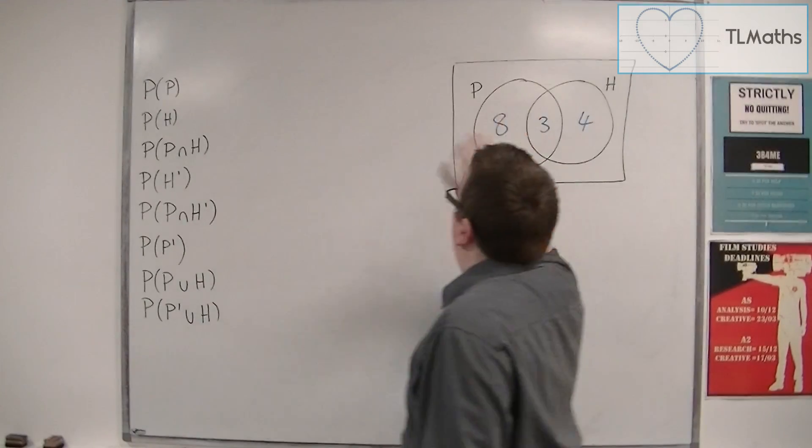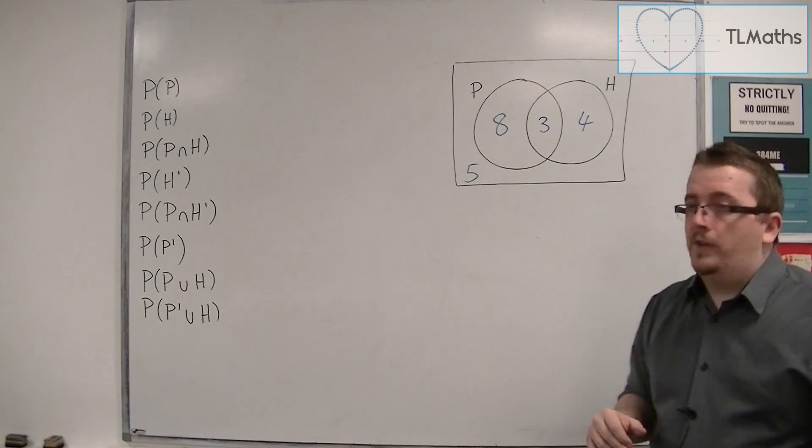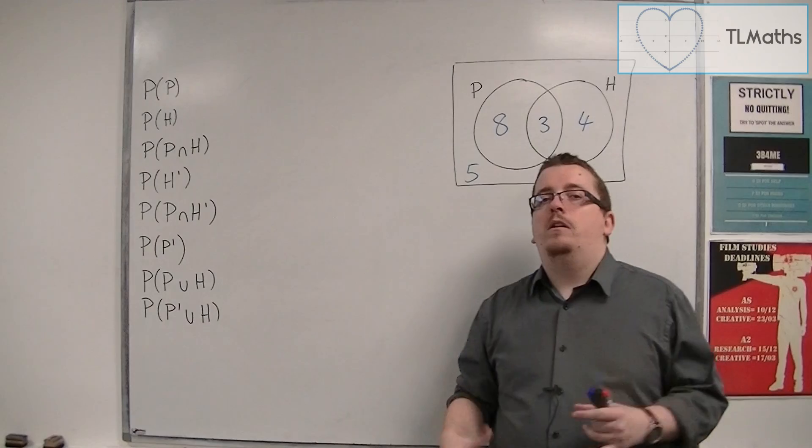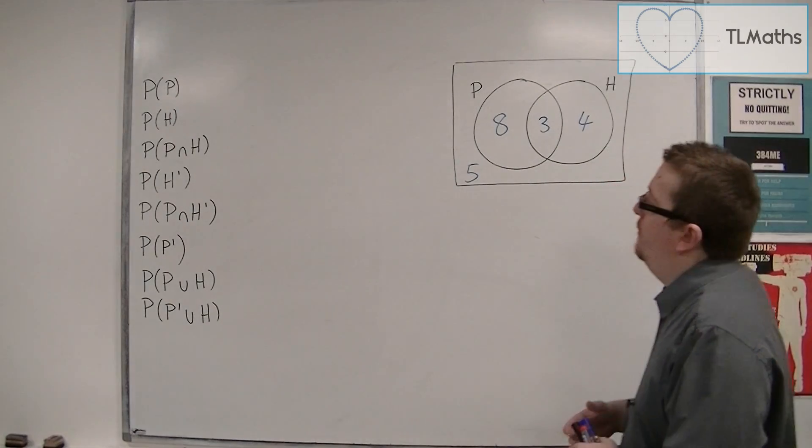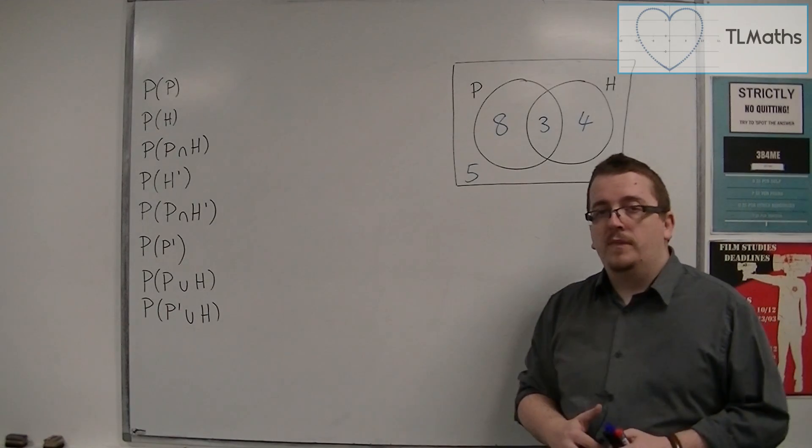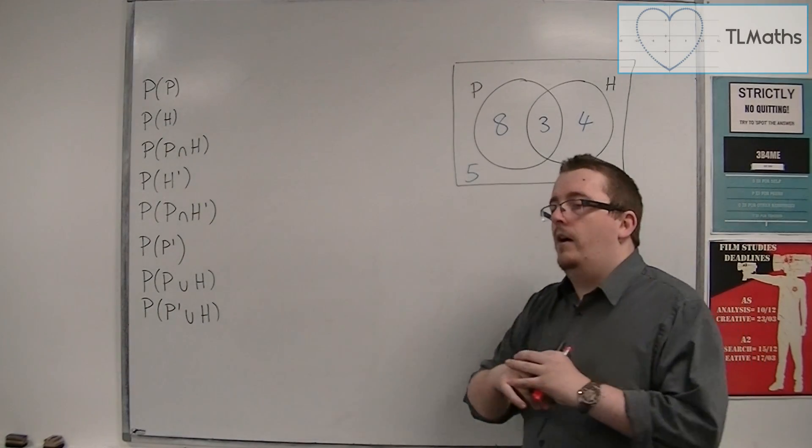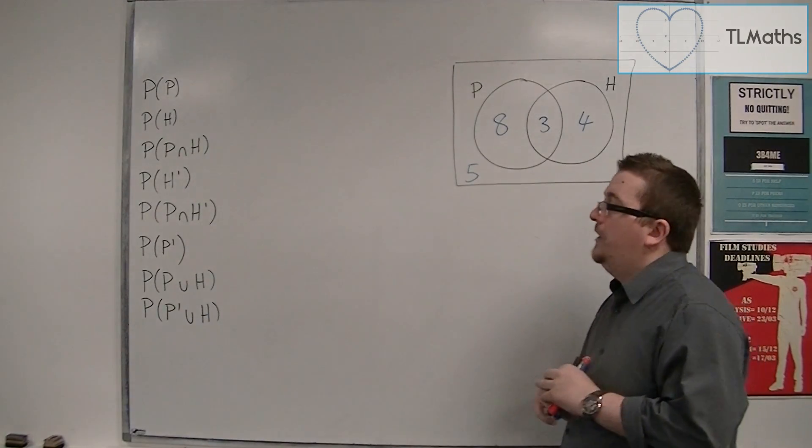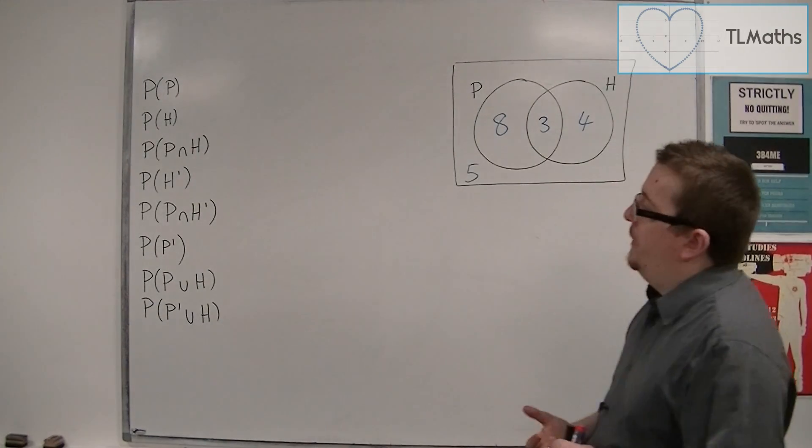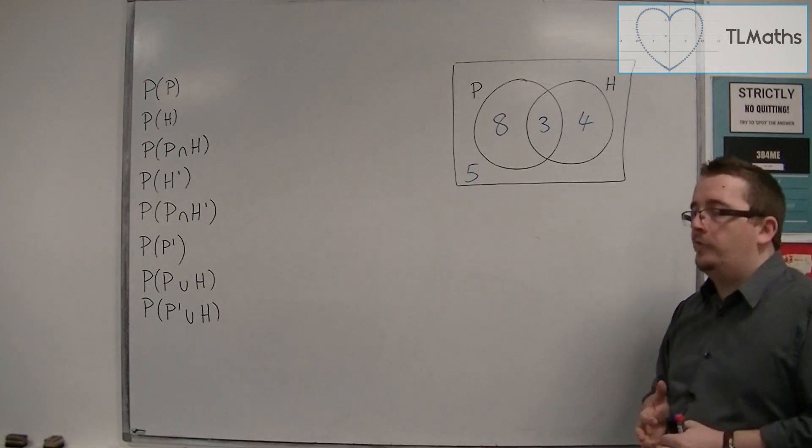So this is the Venn diagram that I've filled out. Now, I haven't written the probabilities in these sections. I've written how many there are in each section, which is a perfectly valid form for a Venn diagram. And from this, I want to work out the probabilities of each of these. So I've made a nice selection of probabilities that I could potentially be asked to find.